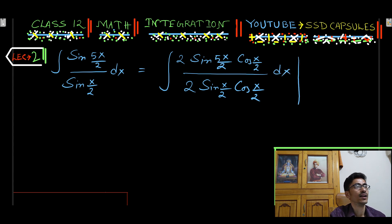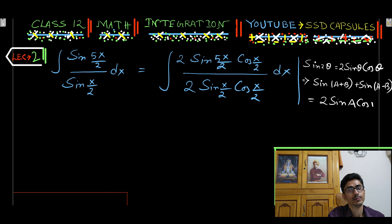We write down the formula. We know that sin 2 theta equal to 2 sin theta cos theta. Also another formula: sin a plus b plus sin a minus b equal to 2 sin a cos b. These two formulas we are going to use now.